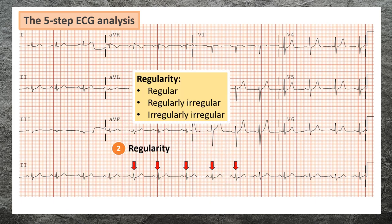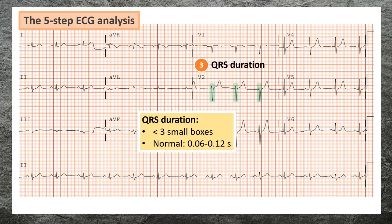Step two: determine the regularity of the rhythm. A regular rhythm means a constant R-to-R interval. A regularly irregular rhythm means a variable R-to-R interval with a pattern. An irregularly irregular rhythm means a variable R-to-R interval with no pattern.